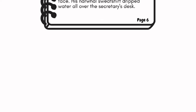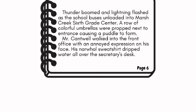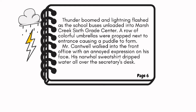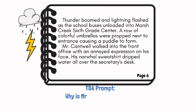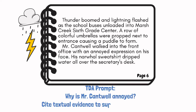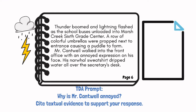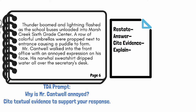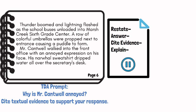Now let's move on to our hard example. For the first two, I didn't ask you to do anything, but this time I'm actually going to ask you to pause after I read the passage and the prompt and have you try to set it up yourself. Our passage for the hard example is: thunder boomed and lightning flashed as the school buses unloaded into Marsh Creek 6th grade center. A row of colorful umbrellas were propped next to the entrance, causing a puddle to form. Mr. Cantwell walked into the front office with an annoyed expression on his face. His narwhal sweatshirt dripped water all over the secretary's desk. What if my prompt was: why is Mr. Cantwell annoyed? Cite textual evidence to support your response. Hit pause now and try to set up that pre-writing by writing restate, answer, cite evidence, and explain, and try the steps on your own. When you're ready, resume the video and compare your answers to mine.